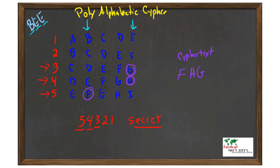So our result would be F, H, G with an input of bee and 5, 4, 3, 2, 1 as our secret.